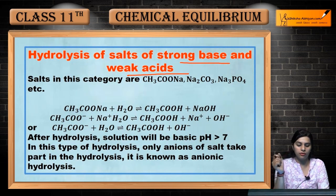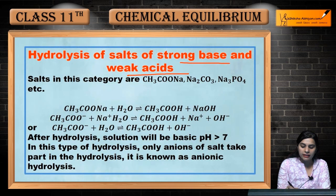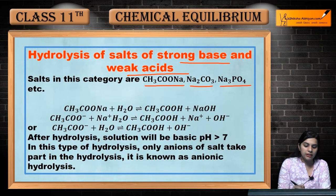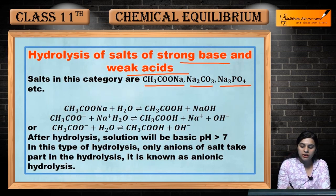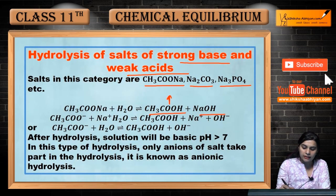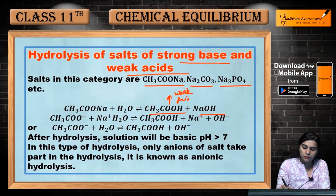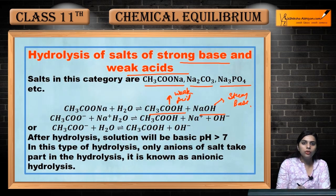Aur usse aap kya bologe? Anionic hydrolysis. Example dekhte hain: salts in this category are CH3COONa (sodium acetate), sodium carbonate, sodium phosphate, etc. In salt ka hydrolysis kiya to kis acid se hai ye? Acetic acid aur sodium hydroxide — this is a weak acid and this is a strong base. So CH3COO⁻ negatively charged ion banega.